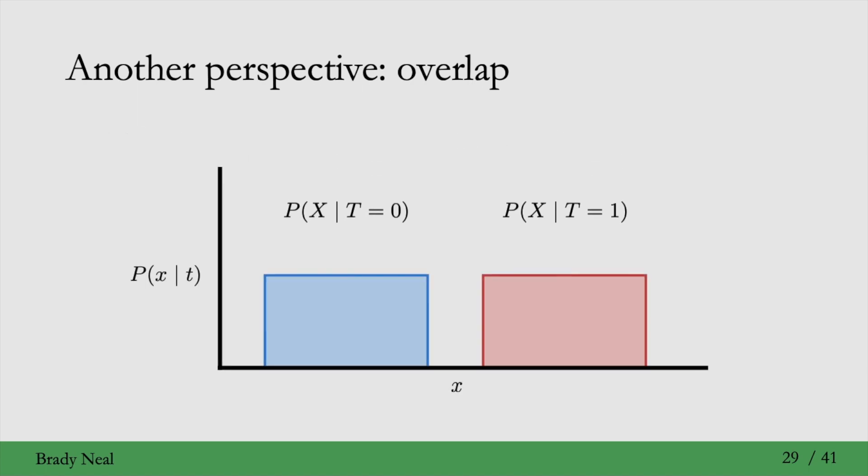If we were to visualize these distributions, say they looked like this—they're two uniforms that don't overlap at all. If they don't overlap at all, we have a severe positivity violation.